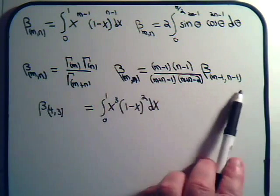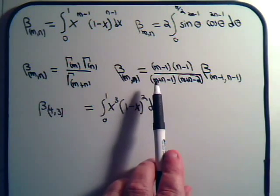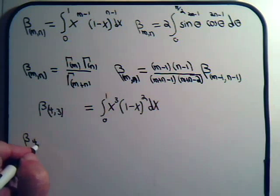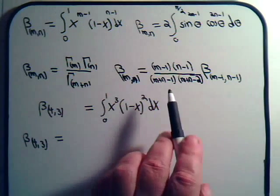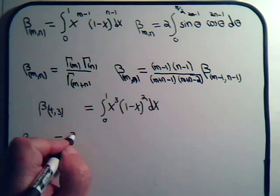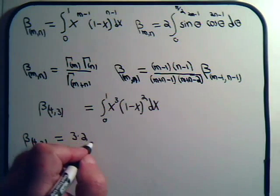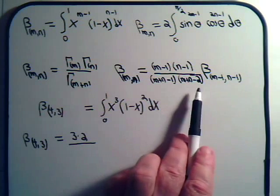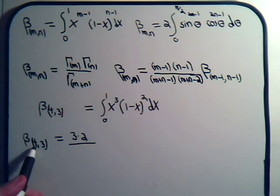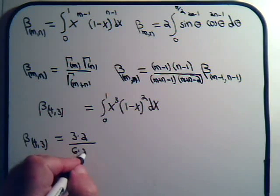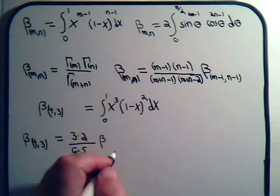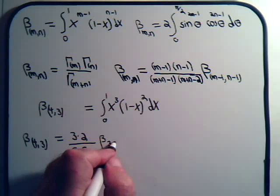Let's start with our reduction formula to see how it works out in practice. We have the beta function of 4, 3 equals (m minus 1) times (n minus 1), so that's 3 times 2, divided by (m plus n minus 1)(m plus n minus 2), which is 7 times 6, times 5, times the beta function of 3, 2.